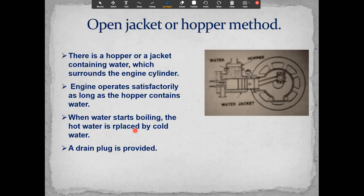The next method is the open jacket or hopper method. The cylinder is surrounded by a hopper containing water. The engine operates satisfactorily as long as the hopper contains water. When the water starts boiling, the hot water is replaced by cold water. A drain plug is also provided in this open jacket method.